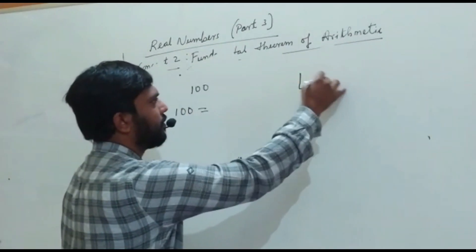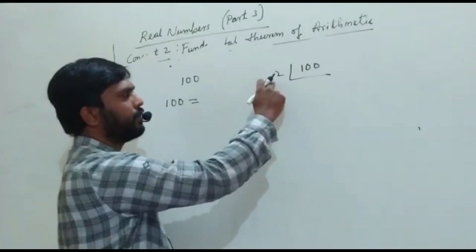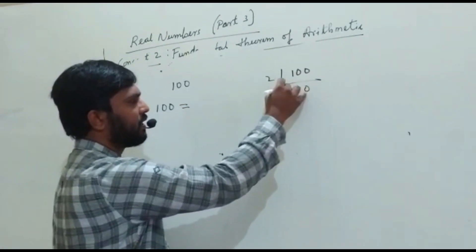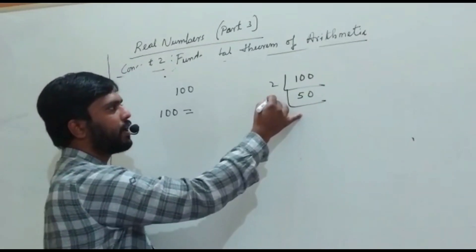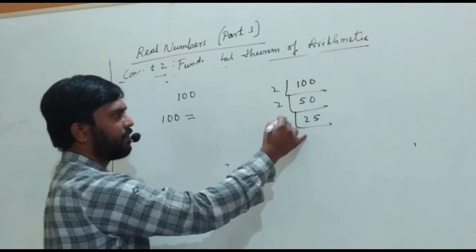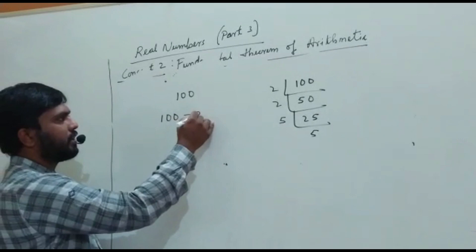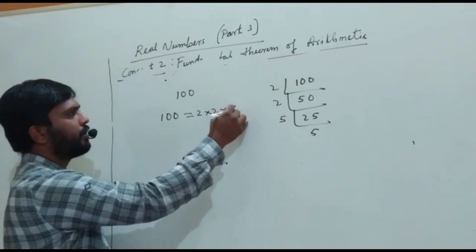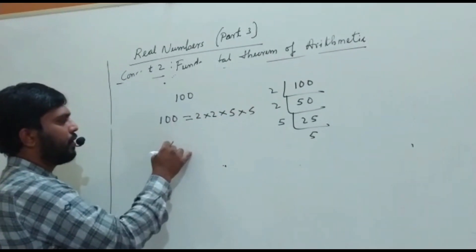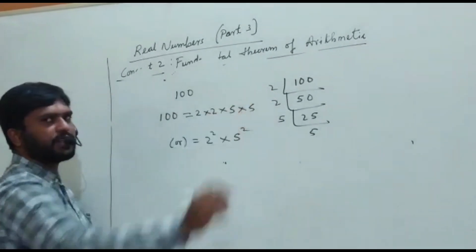You can make the prime factorization. Take 2. 2 into 50 becomes 100. Again you can take 2. 2 into 25 becomes 100. The next prime number you take 5. 5 into 5 becomes 25. So 100 can be written as 2 into 2 into 5 into 5, or 2 square into 5 square.